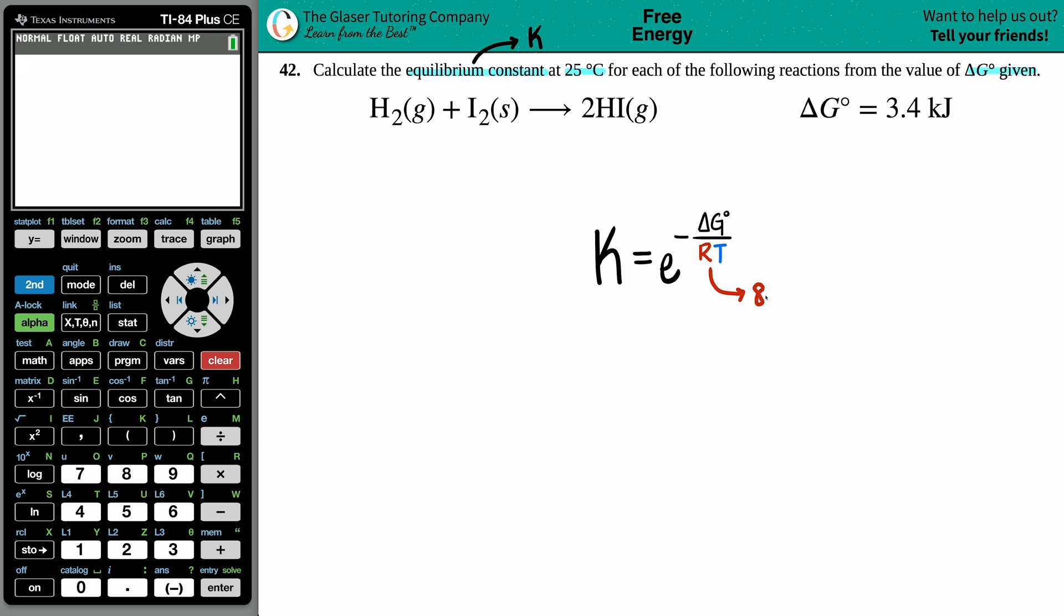The R value is 8.314. If you're using 8.314, the units are joules per mole times Kelvin. These are the units that we have to watch out for when we're plugging in our other variables.